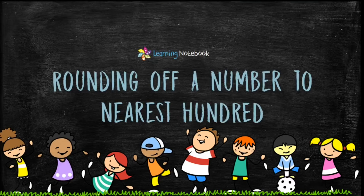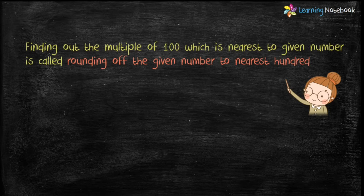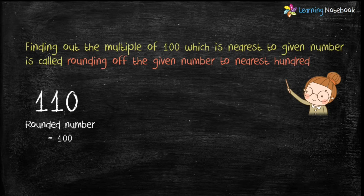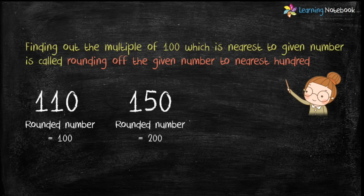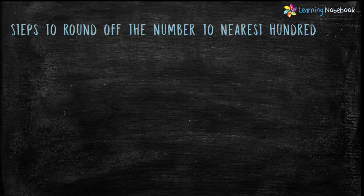Now let's understand rounding off a number to the nearest hundred. Finding out the multiple of 100 which is nearest to a given number is called rounding off the given number to the nearest hundred. For example, by rounding off 110 to the nearest hundred we get 100, by rounding off 150 we get 200, and by rounding off 170 we also get 200.